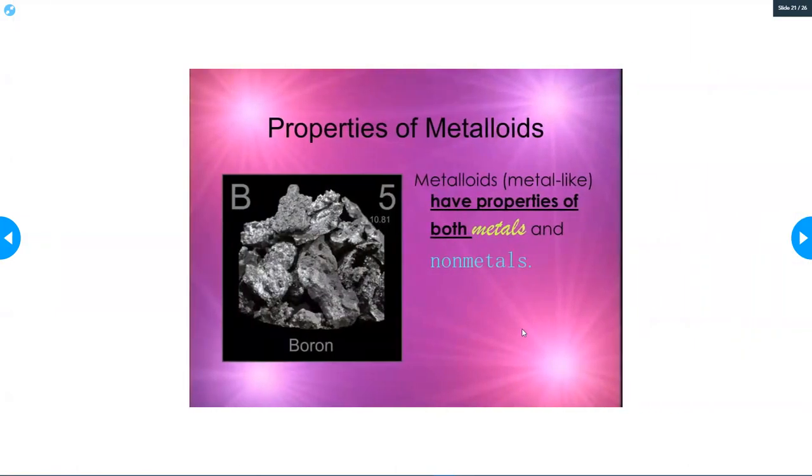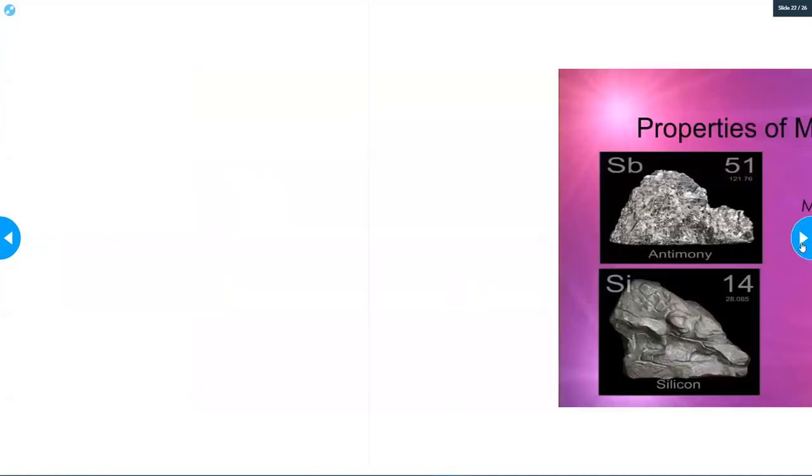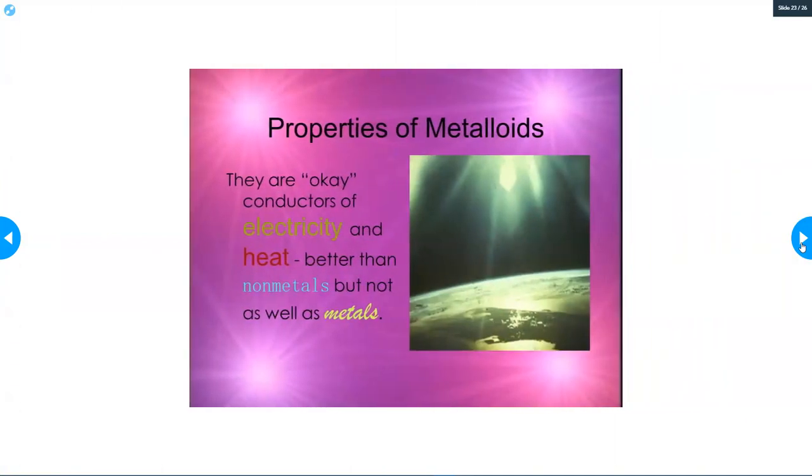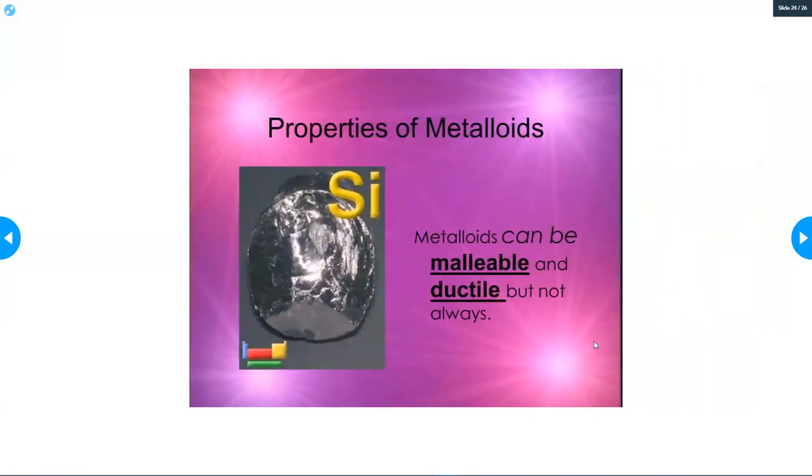Metalloids have properties of both metals and nonmetals. So in a test question, if you see something that says it's brittle but it's a semiconductor, that's going to be your best bet to know if it's a metalloid. They can be shiny or dull. They're called semiconductors, and that's your biggest clue if something is a metalloid. If you see the word semiconductor, remember that - it will be important. If you see the word semiconductor, then you know it's a metalloid.